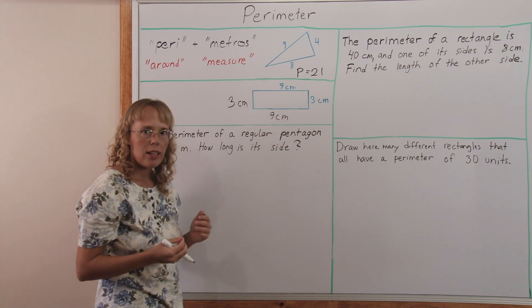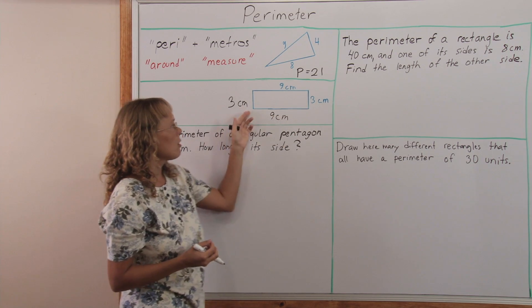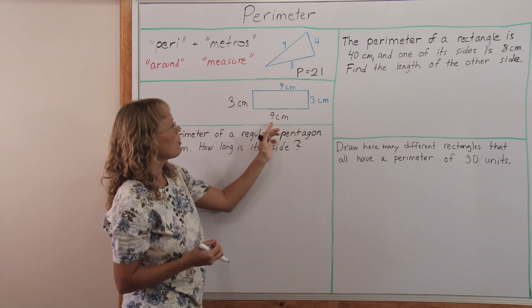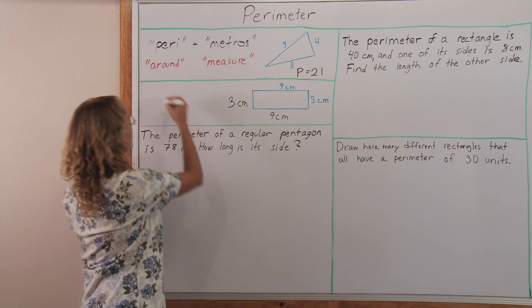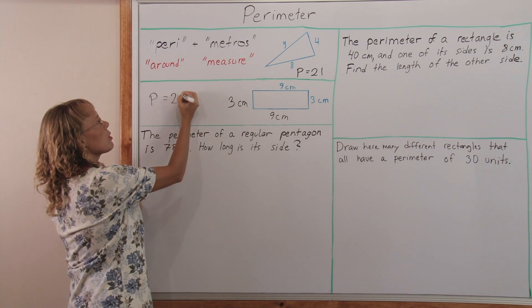Of course in a rectangle it's easy because this side here is 3 centimeters and then this side is 9. So now we know all the side lengths and we can just add, go around the loop and 9 plus 3 is 12. These two also make 12, so 12 and 12 is 24. The perimeter is 24 centimeters.